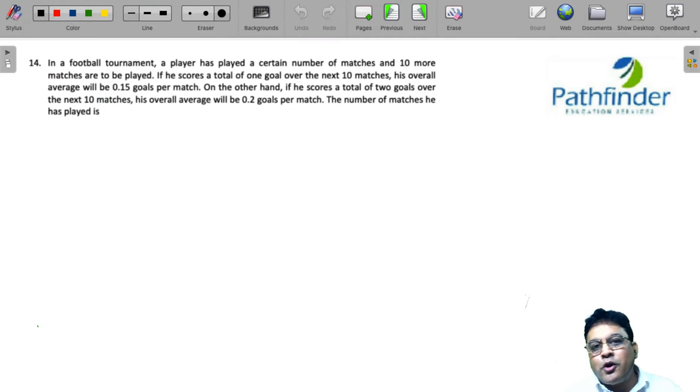CAT 2021 slot 2, question number 14. In a football tournament, a player has played a certain number of matches and 10 more matches are to be played. If he scores a total of 1 goal in the next 10 matches, his overall average will be 0.15 goals per match. On the other hand, if he scores a total of 2 goals in the next 10 matches, his overall average will be 0.2 goals per match. The number of matches he has played is?